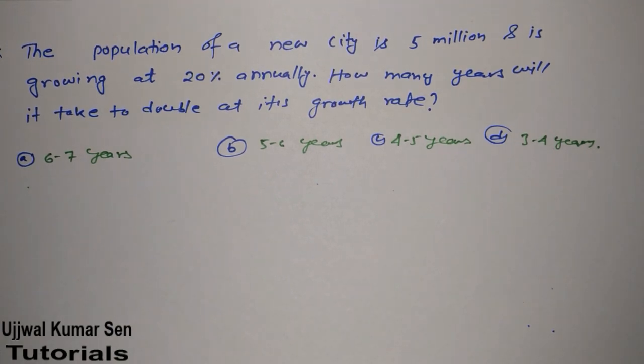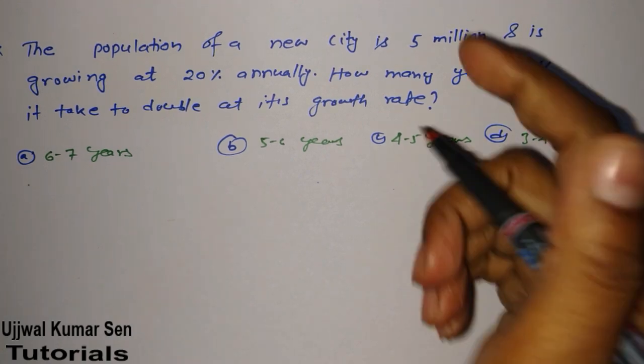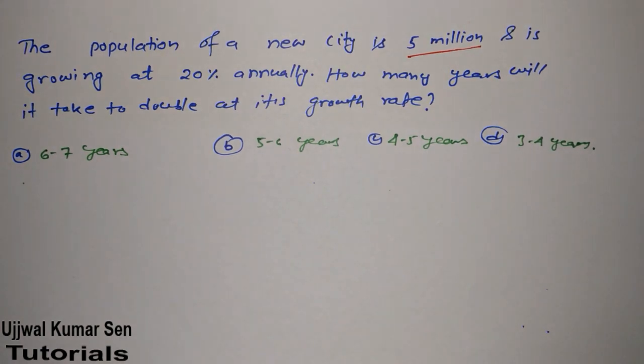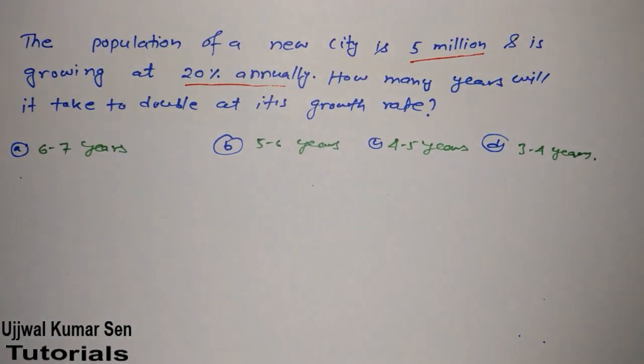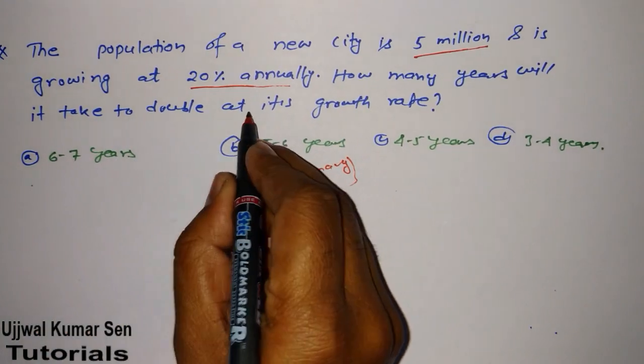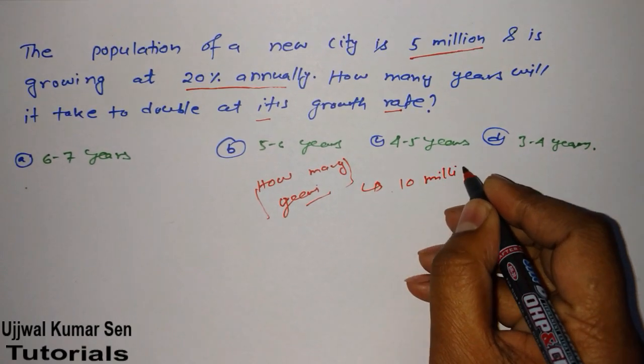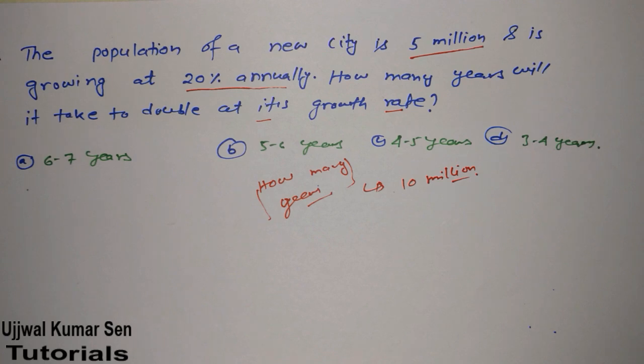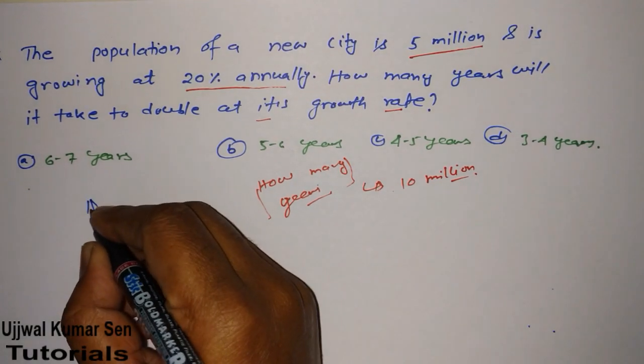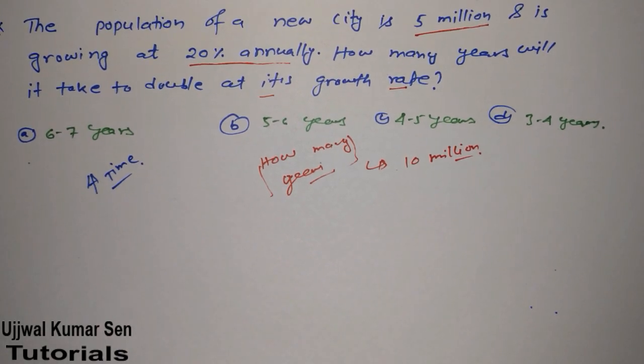In this question it states that the population of a new city is 5 million and is growing at a 20 percent annual rate. How many years will it take to double at this growth rate? That means how many years will it take to get the population of the city to 10 million. Now if I use the basic approach, it will probably take a lot of time to invest. So for this we have a formula. We can use this formula for any type of problem like this.